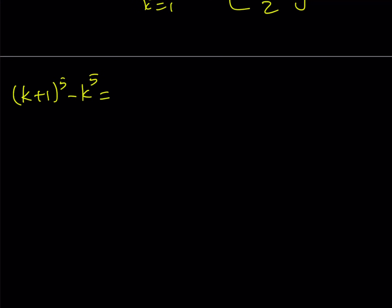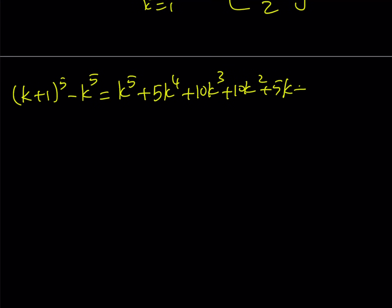Let's go ahead and use the binomial theorem. The binomial coefficients for the fifth power are 1, 5, 10, 10, 5, 1. So expanding (k+1)^5 and subtracting k^5 gives us our expression.